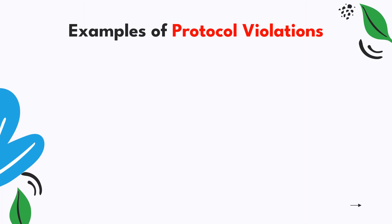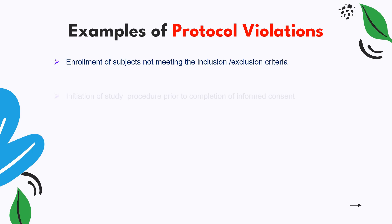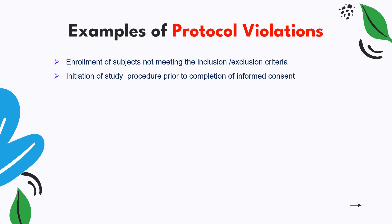Let's understand examples of protocol violations. If a subject is enrolled and does not meet the inclusion or exclusion criteria — which must be checked very strictly since they determine a subject's inclusion in the study — that is a violation. If any procedure required to be completed prior to informed consent is not completed, that also qualifies as a protocol violation.